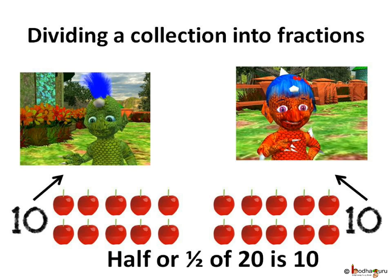So, if we have twenty cherries, how many will each get? Each child will get twenty divided by two, which is ten. So each gets ten cherries.